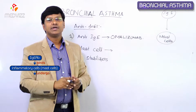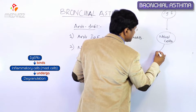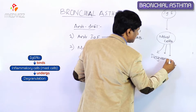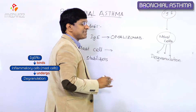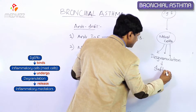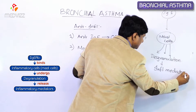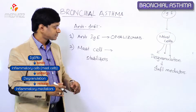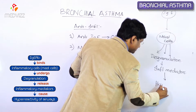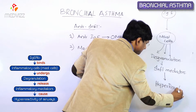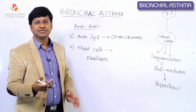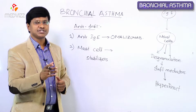When the IgE antibody is bound to the mast cells, the mast cells undergo degranulation. When the mast cells undergo degranulation, the inflammatory mediators are released. These inflammatory mediators cause hyper-reactivity of the airways. This is the basic sequence of events that makes an individual land up in having difficulty in breathing in patients with bronchial asthma.